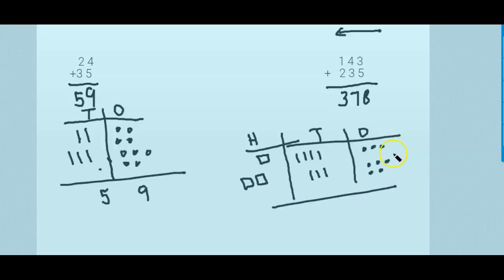So if I add all these together: 1, 2, 3, 4, 5, 6, 7, 8 in the ones place, 1, 2, 3, 4, 5, 6, 7 in the tens place, and 1, 2, 3 in the hundreds. So your total would be 378.